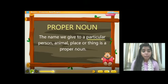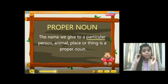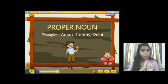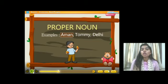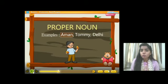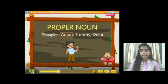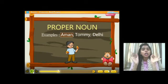While in proper noun, the name we give to a particular person, animal, place or thing is a proper noun. When we give a certain name to them, then we call it a proper noun. For example: Aman, Tommy and Delhi. So, Aman is the name of a boy. If I had said 'he is a boy', that is very common — there are so many boys. But I am telling the name specifically, that is Aman. For example, he is Jamin, he is Siddharth, he is Sufyan. So, these are the names of a boy, so it is a proper noun.